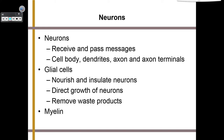Neurons receive and pass messages. They are composed of a cell body, dendrites, axon, and axon terminals. There are also glial cells. Glial cells float around with neurons and they nourish and insulate them, direct the growth of neurons, and remove waste products. Neurons are also coated in something called myelin, and this is done to protect them.